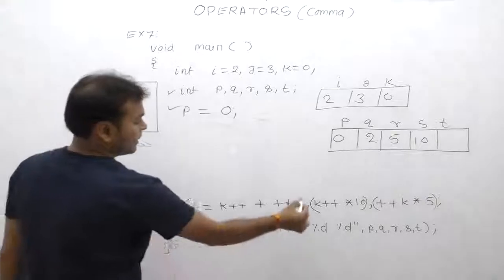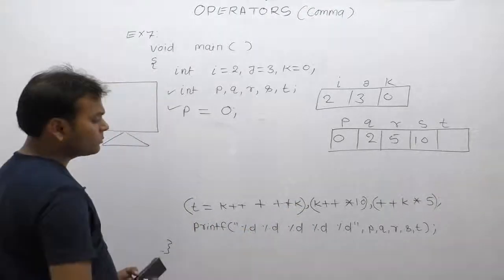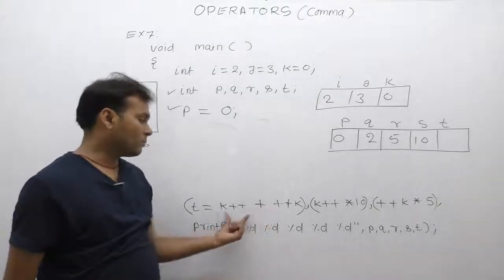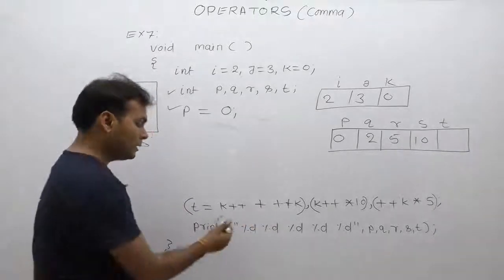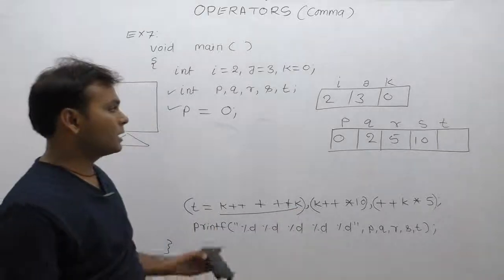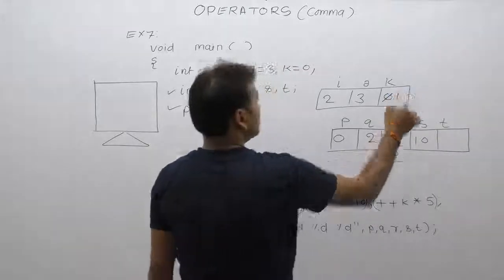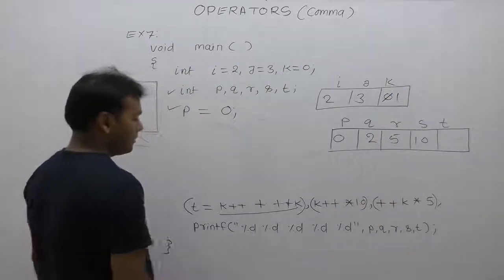This is the first expression. While applying assignment rule, perform all pre operations. Pre k means pre increment, there's only one time, therefore k becomes 1. Then assignment.